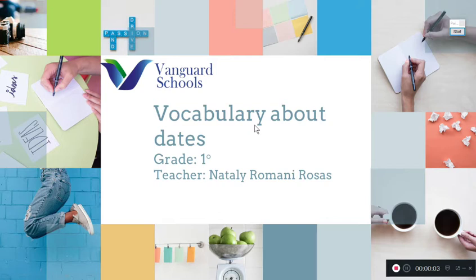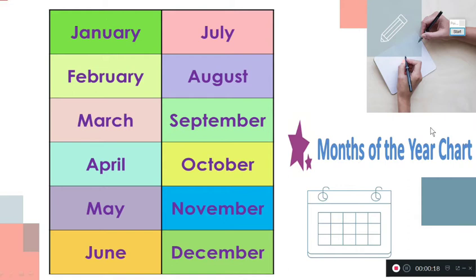Hi, good morning students. Welcome to today's English lesson. Today we're going to focus on how to use vocabulary and practice pronunciation about ordinal numbers. First, we have the months of the year: January, February, March, April, May, June, July, August, September, October, November, and December. Remember that we have 12 months of the year.